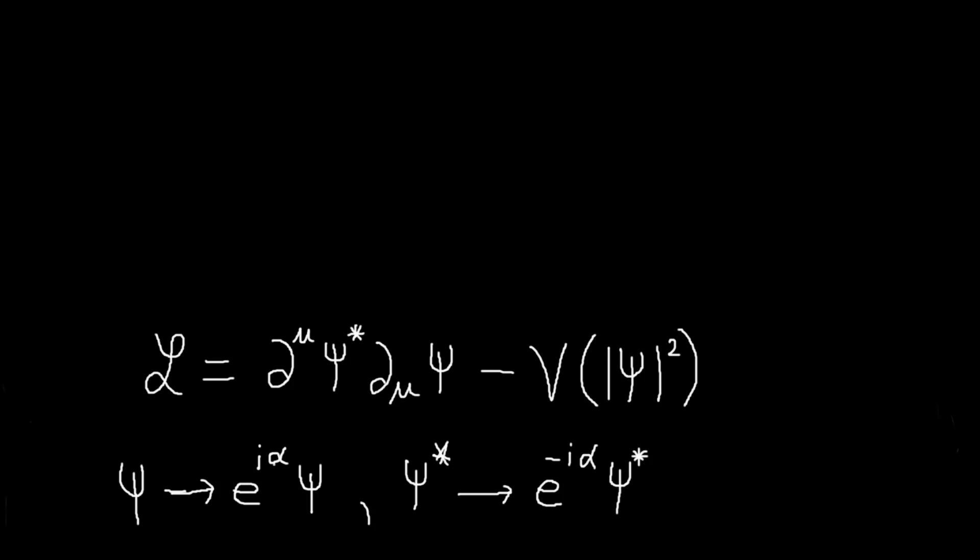And it's very easy to see, so every term in this Lagrangian, both these terms, they have both a psi star and a psi. So if we make this change, we're always going to get an e to the i alpha times an e to the minus i alpha, which will be one. So this Lagrangian is completely invariant under this transformation.